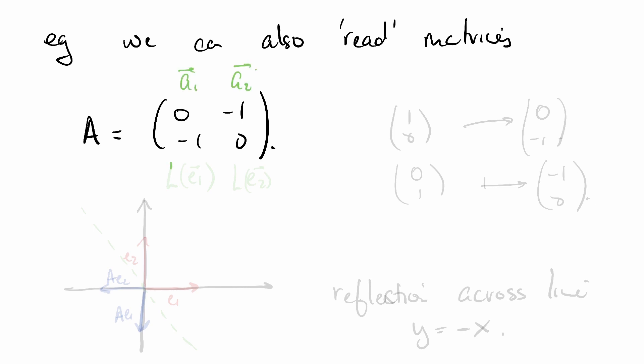That means the linear transformation sends E_1 to this column, (0, -1), and it sends E_2 to this column, (-1, 0). Okay, writing that down. So (1, 0) gets sent to (0, -1), and (0, 1) gets sent to (-1, 0).